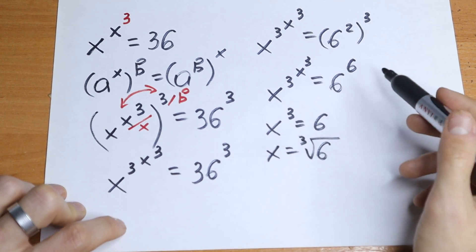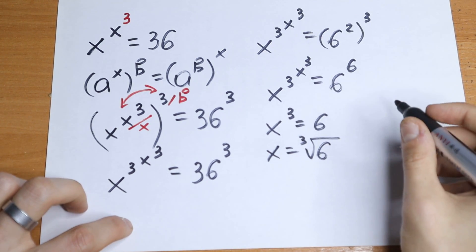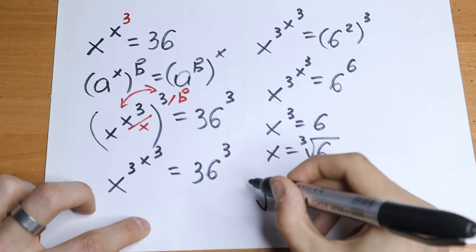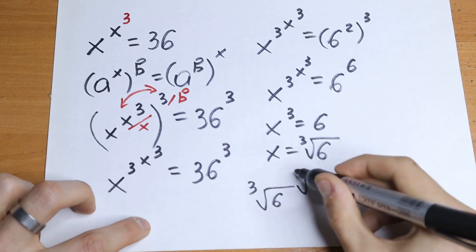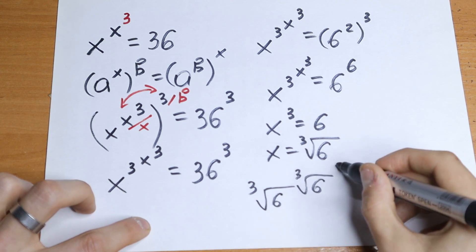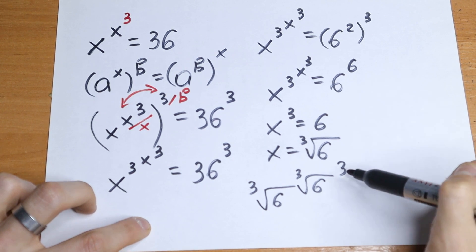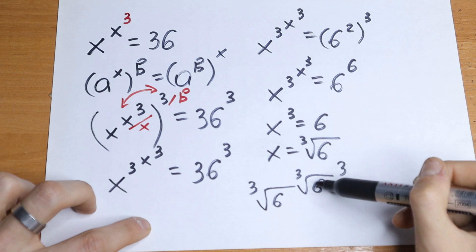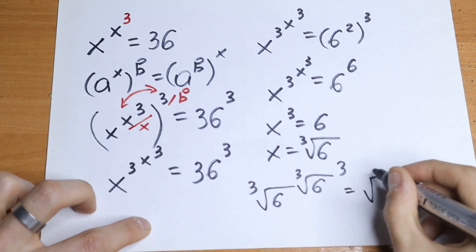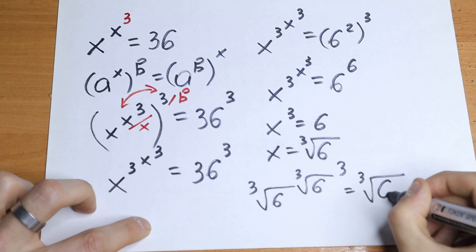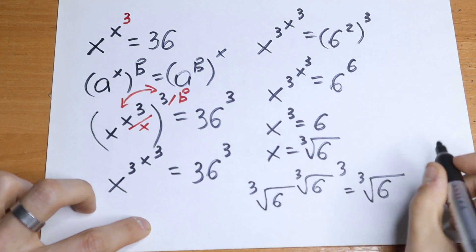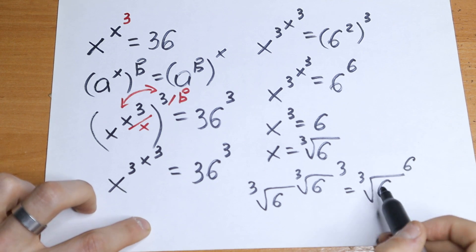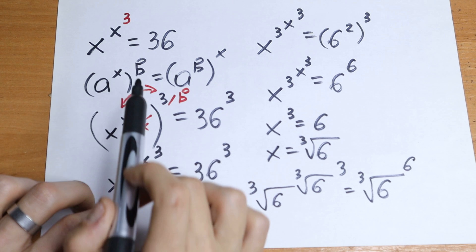And for sure x will be equal to the cube root of 6 — just take the cube root from both sides. We can also verify our answer. We will have the cube root of 6 to the power of the cube root of 6 to the power 3. If we raise this to the third power we will have only 6. So the final step gives us the cube root of 6 raised to the power 6, which equals 6 squared, and that equals our 36.